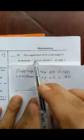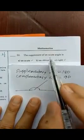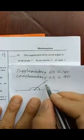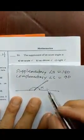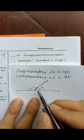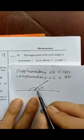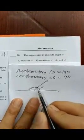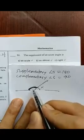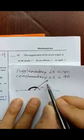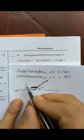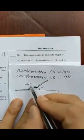Since the question asks about the supplement of an acute angle — and an acute angle is always less than 90 degrees — the supplement is the other angle that makes 180 degrees. So this supplement is bigger than 90 degrees.